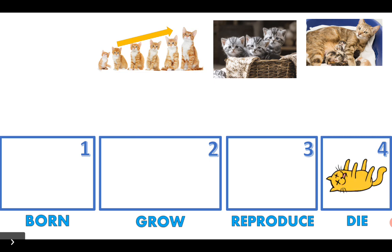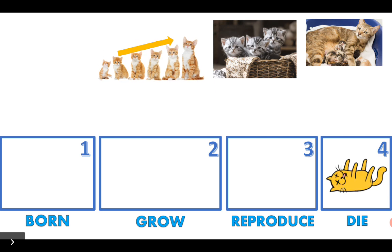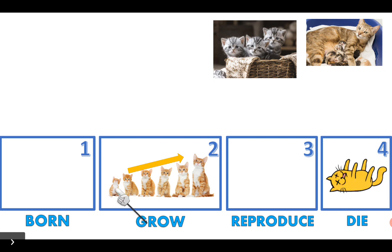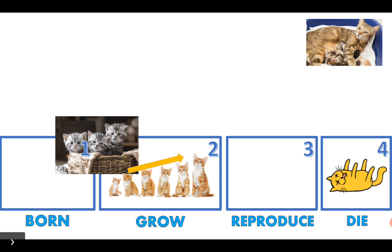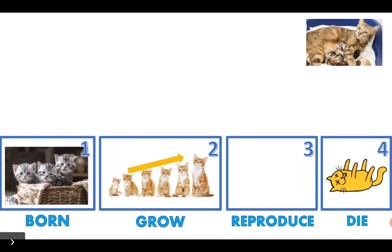What about this picture over here? Does it represent born, grow, or reproduce? Very good! Does it belong to number one, number two, or number three? Awesome! It belongs to number two — grow. From very, very little to very, very big. And this picture? Born! This is born because they are babies. And now it's easy peasy — it's a mummy cat with her baby cats. Is it born, grow, reproduce, or die? Reproduce! Good job!